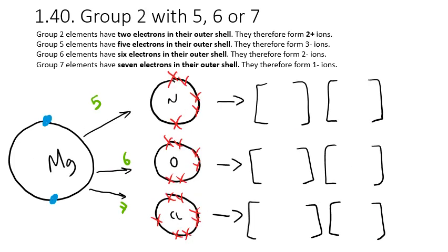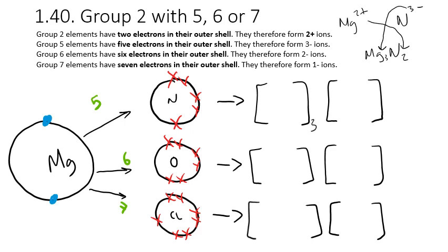The next set of combinations is group 2 elements bonding with groups 5, 6, or 7. Group 2 elements form 2+ ions — in this case I'm using magnesium, which has 2 electrons in the outer shell and will give up both to form an ionic bond. Starting with magnesium bonding to nitrogen: magnesium forms a 2+ ion and nitrogen forms a 3- ion. Using the crossing over method, we take the 2 from Mg2+ and the 3 from N3- to get Mg3N2, giving us 3× 2+ = 6+ and 2× 3- = 6-, which is balanced.